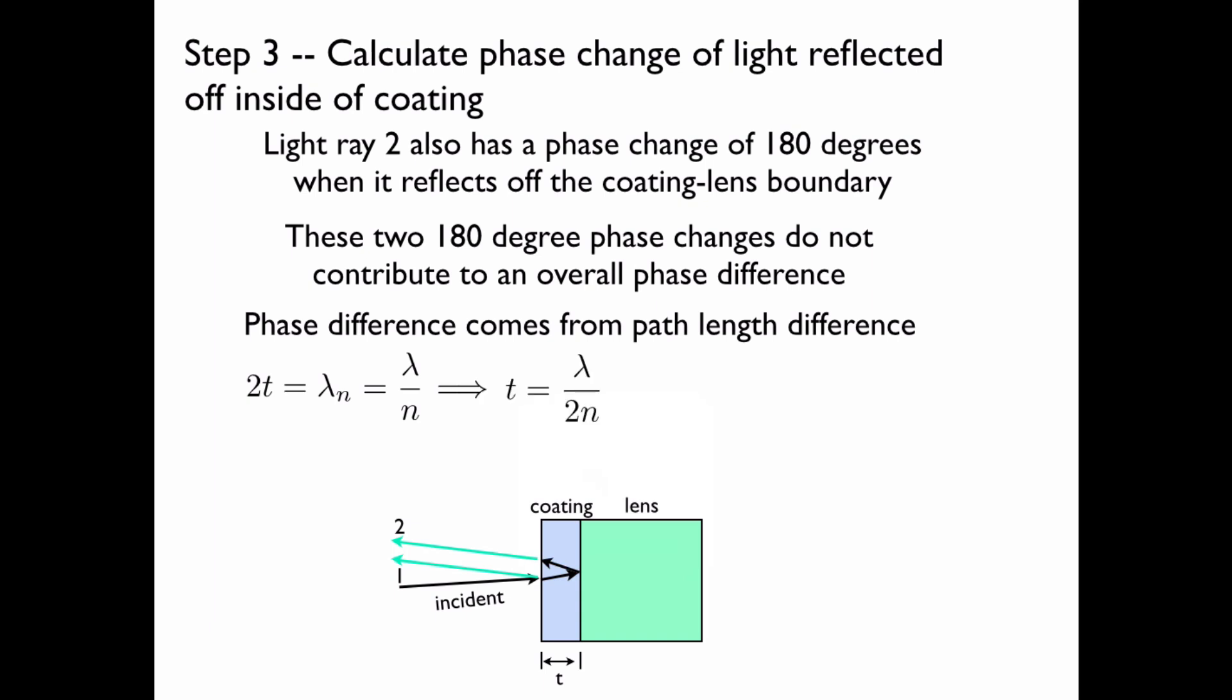So rearrange, we want to solve for the minimum thickness of the coating. So t is equal to lambda over 2n. We plug in what we know with 520 nanometers. And we have that the thickness is 203 nanometers.